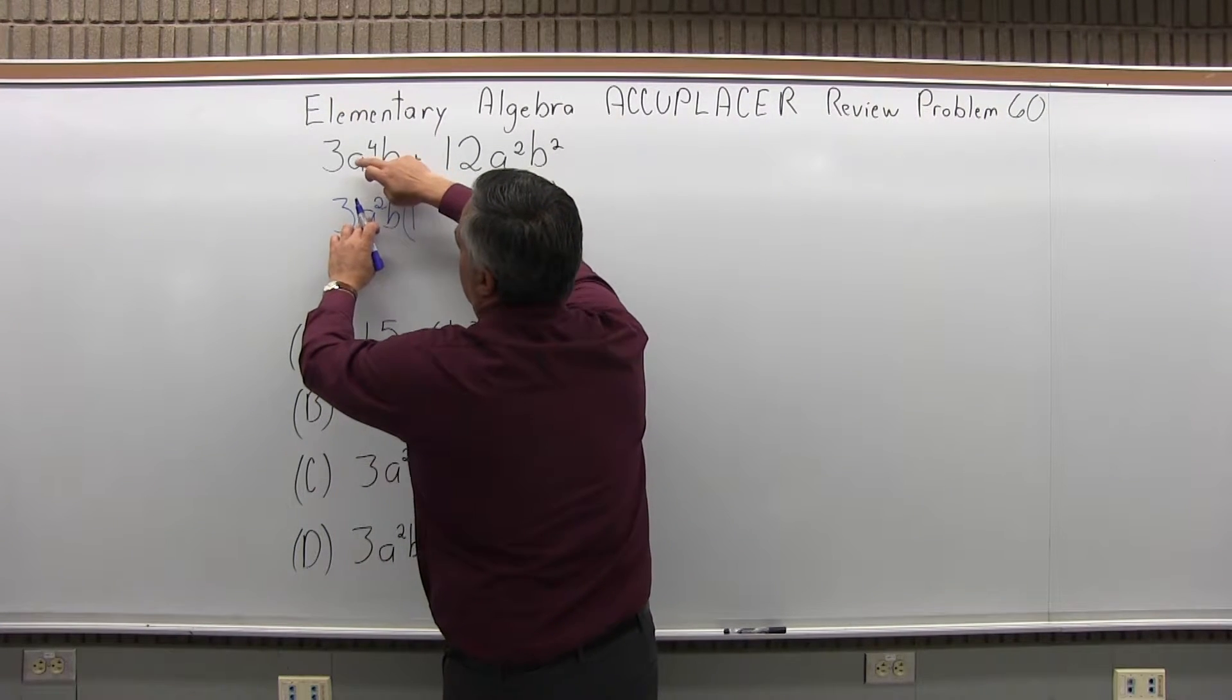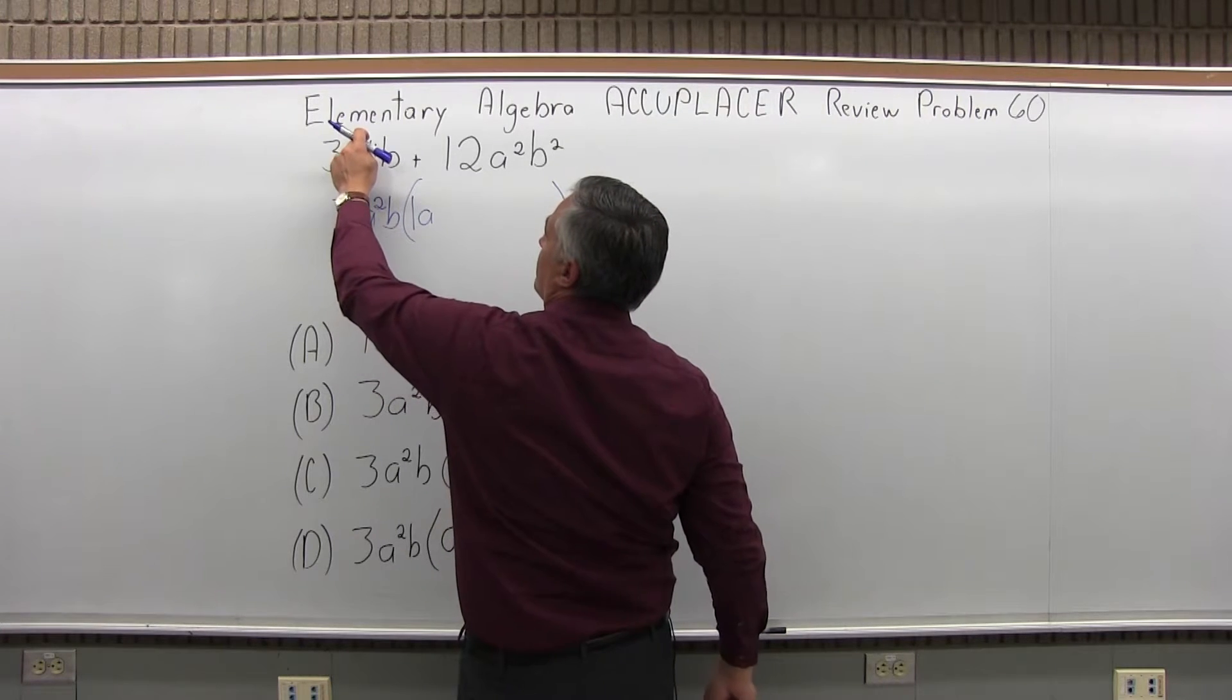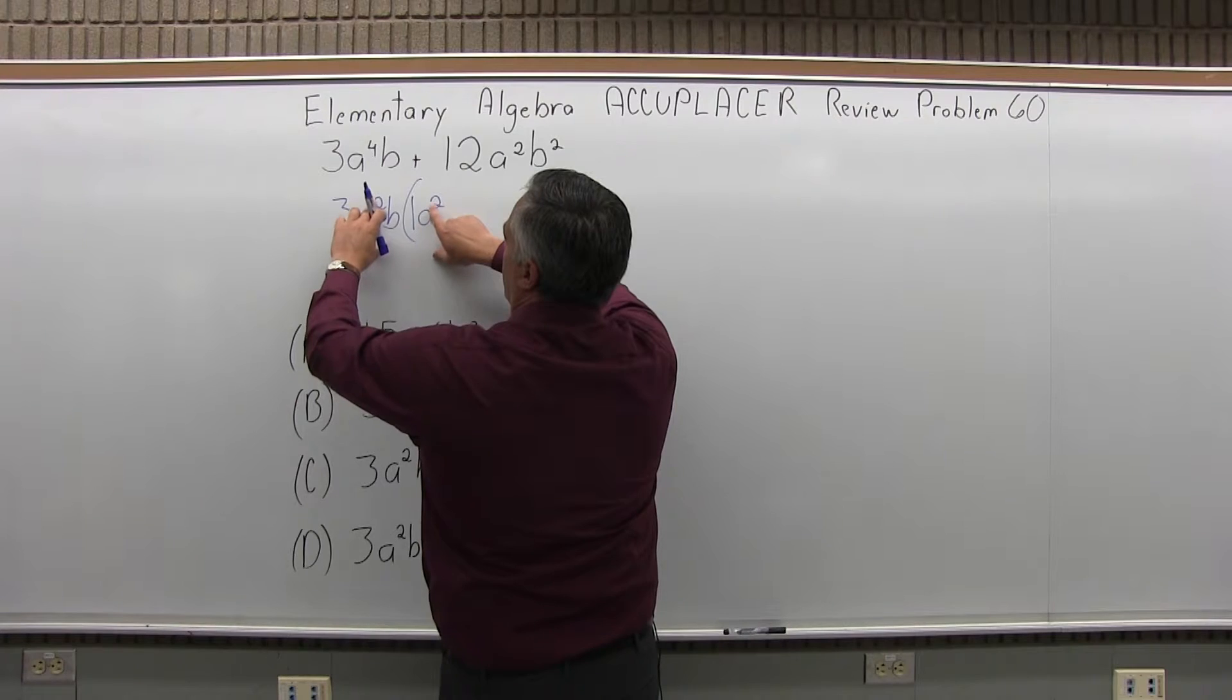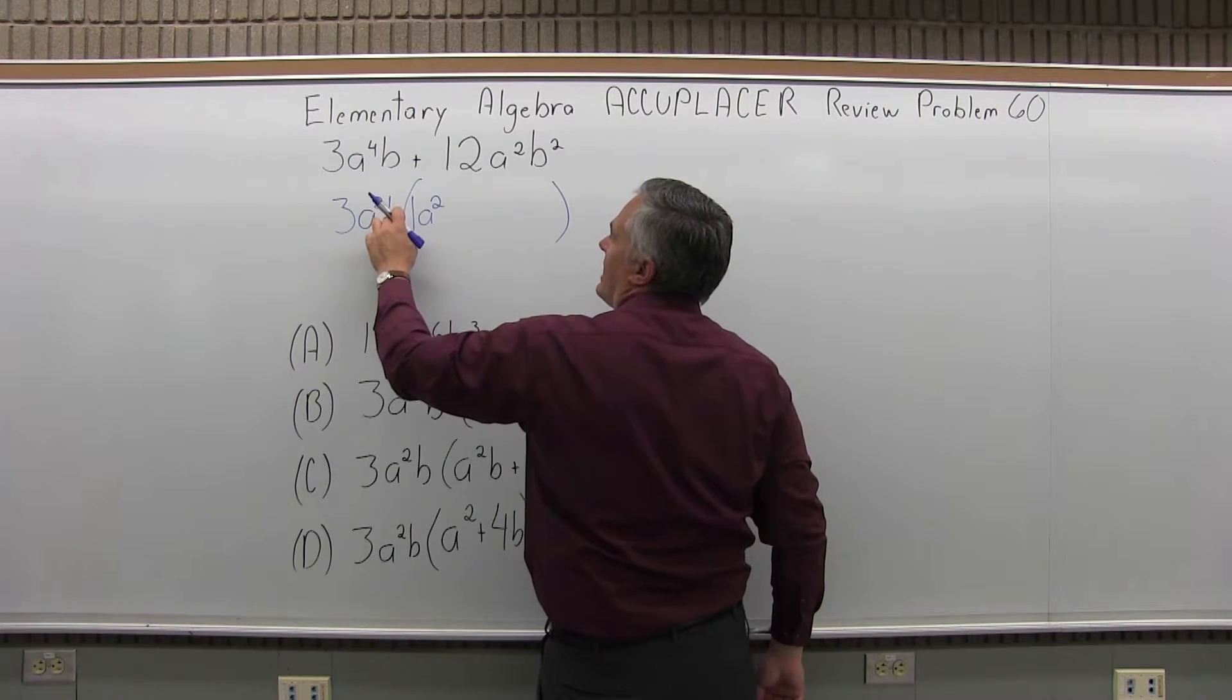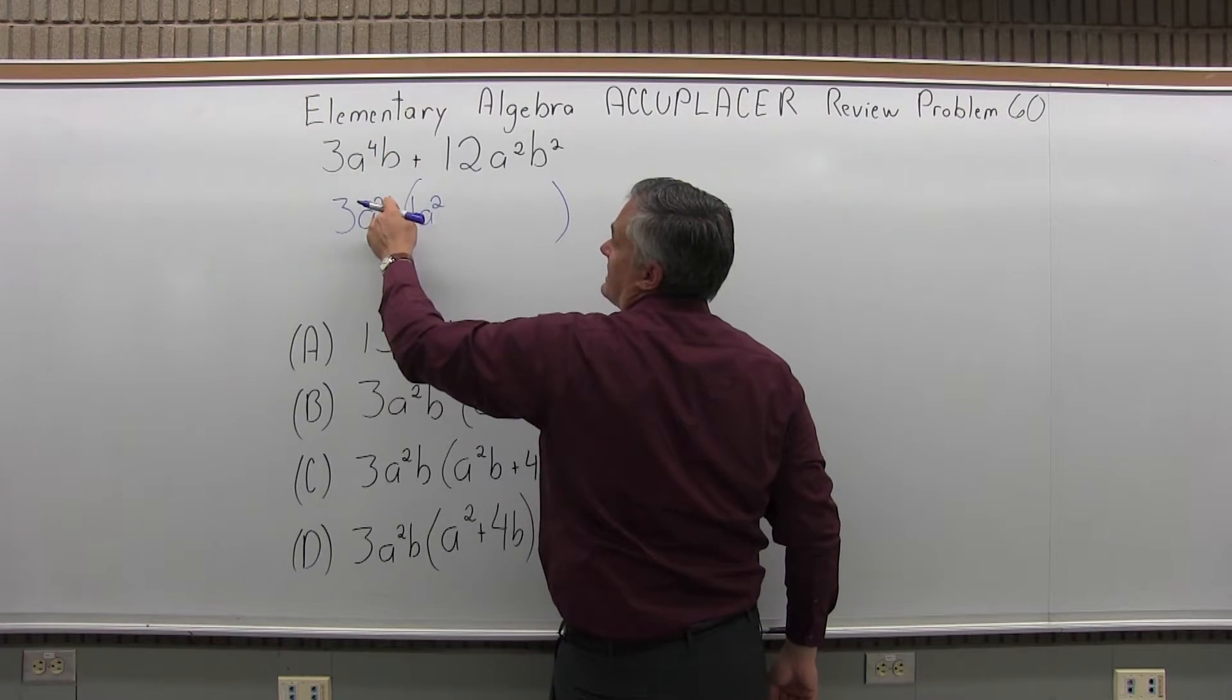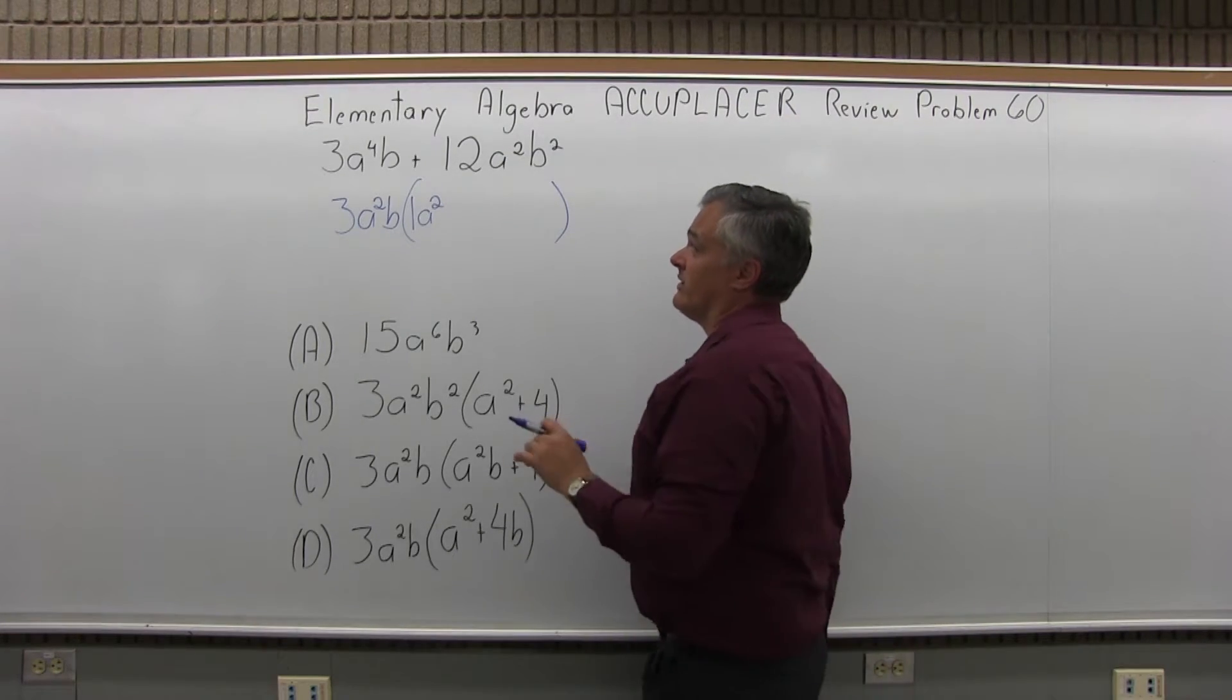Now look at the A's. Forget everything else, just look at the A's. A to the second times what will put me back up to A to the fourth? Well, another A to the second. A to the second times A to the second, I add the exponents, would be A to the fourth. And then B times what would give me B? Well, the B's all set, I've got it. So it's one A squared, or we could just really write A squared, we don't need the one in front.